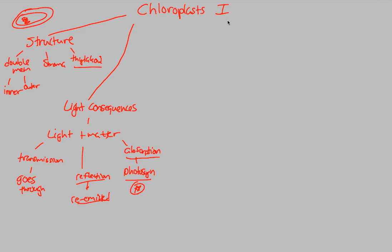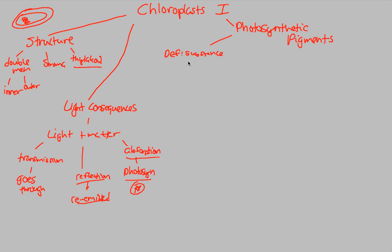In order to understand this absorption, we have to look at photosynthetic pigments. We now understand that light has to be absorbed, but it has to be absorbed by something. A photosynthetic pigment is a substance that absorbs visible light. Underline 'absorb' to reiterate that definition — substance that absorbs visible light. This is our functional definition of photosynthetic pigments.